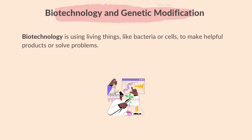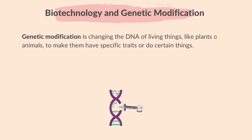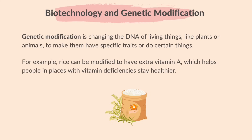Biotechnology is using living things like bacteria or cells to make helpful products or solve problems. Making bread using yeast is an example of biotechnology. Genetic modification is changing the DNA of living things like plants or animals to make them have specific traits or do certain things. For example, rice can be modified to have extra vitamin A, which helps people in places with vitamin deficiencies stay healthier.